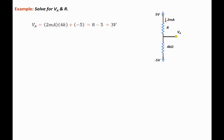R equals the top voltage, five volts, minus VA, the bottom voltage, over I. Since VA equals three volts, we get five minus three over two milliamps, which is one kilo-ohm.